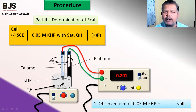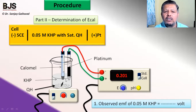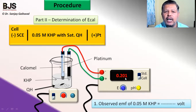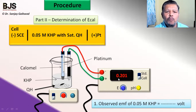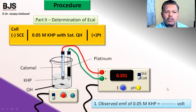The calomel electrode is connected to the negative terminal and the platinum electrode to the positive terminal. Then change the knob from 'standard' to 'same' and the connection starts to measure the EMF between the two electrodes. In this way, we measure the potential difference — the EMF for the potassium hydrogen phthalate solution — which is observed at 0.201 volts. From this value, we can calculate E_cal, i.e., the calomel electrode potential.